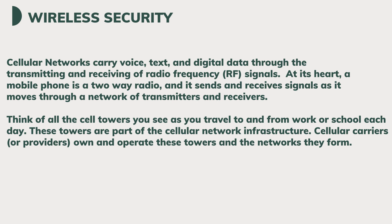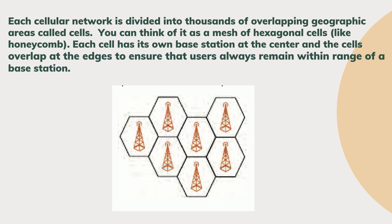These towers are part of the cellular network infrastructure. Cellular carriers or providers own and operate these towers and the networks they form. Each cellular network is divided into thousands of overlapping geographic areas called cells. You can think of it as a mesh of hexagonal cells, like a honeycomb. Each cell has its own base station at the center, and the cells overlap at the edges to ensure that users always remain within range of a base station.